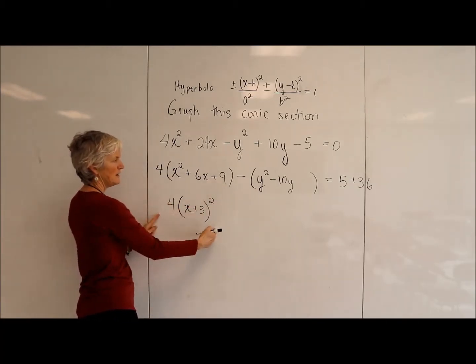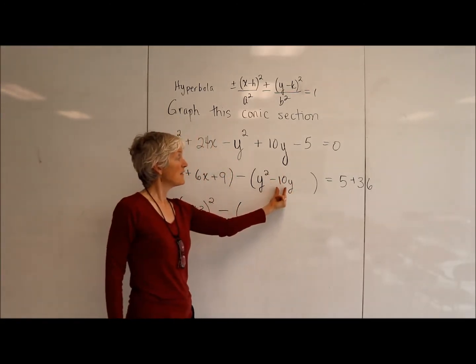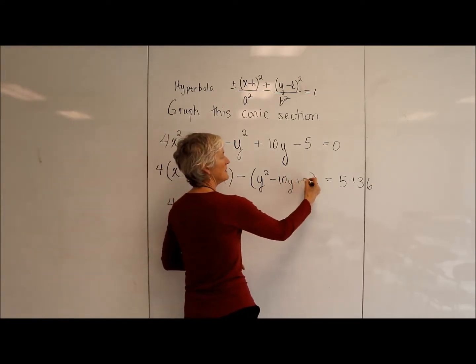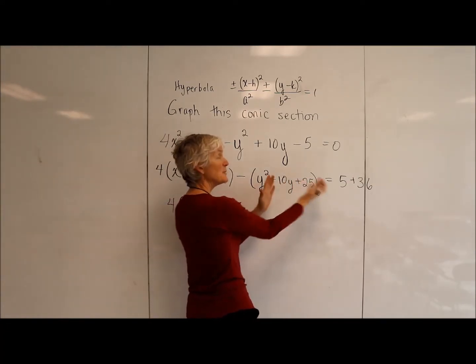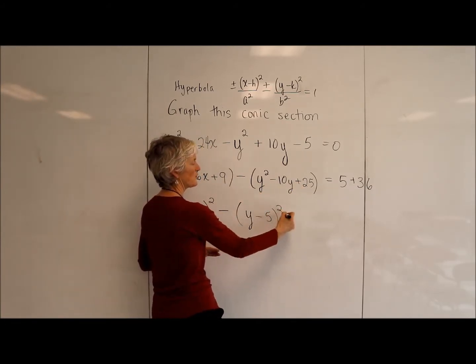So far so good. Let's look at the y's. I want to complete that square. Half of negative 10 is negative 5, I'm going to square that. That gives me a beautiful perfect square trinomial, which I can factor as y minus 5 quantity squared.